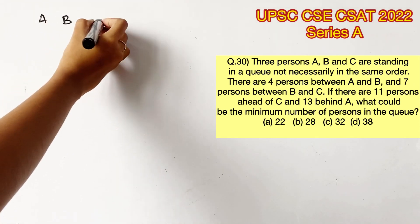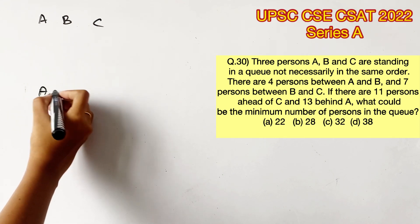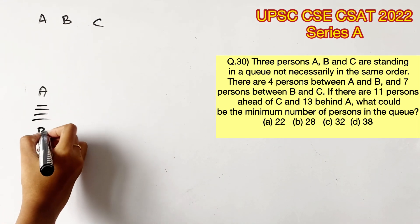Three persons A, B and C are standing in a queue, not necessarily in the same order. So there are 4 people between A and B. A, 1, 2, 3, 4 and B.